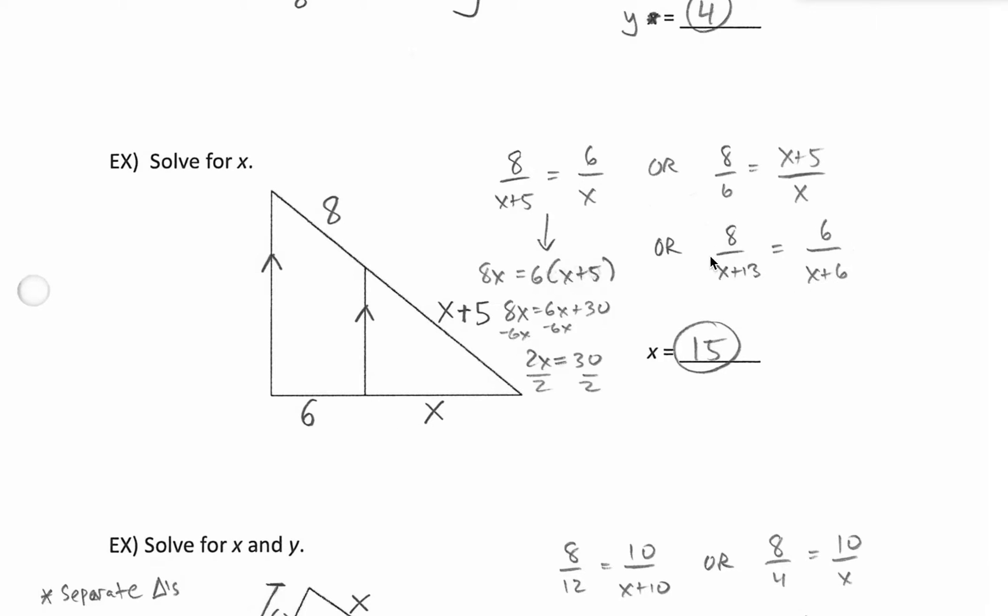Again, there's other ways to do it. No reason to, since we already have 2 to work from here. Cross multiply. 8 times x is 8x. 6 times the quantity x and positive 5. Make sure you distribute. 6 times x is 6x. 6 times 5 is 30. Subtract 6x from both sides. Divide by 2, and your x value is 15.